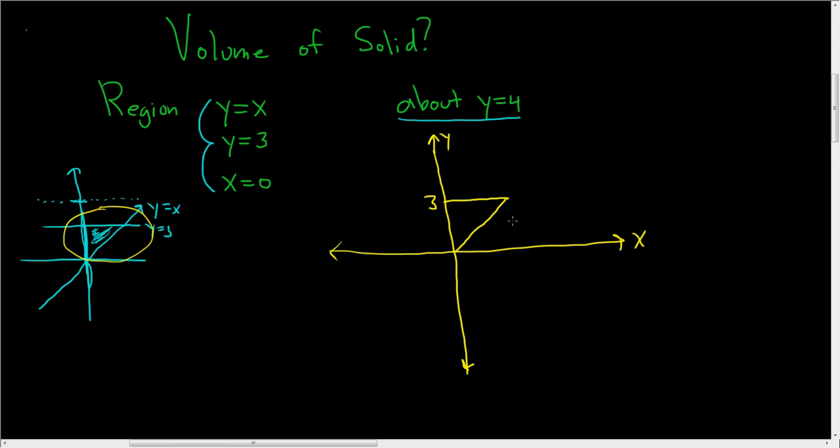And since this is 3, and this is the line y equals x, so when x is 3, so is y, so this is also 3. And we're spinning it about 4, so I'm not going to draw this to scale, but I'll put the 4 up here. So we have some distance between the 3 and the 4.